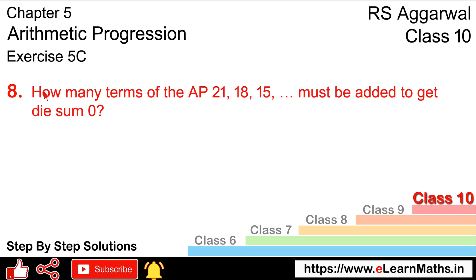Let's do question number 8 of exercise 5C, that is arithmetic progression. Question number 8 is: how many terms of the AP 21, 18, 15... must be added to get the sum 0?